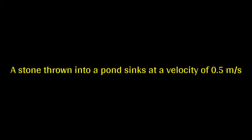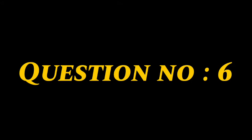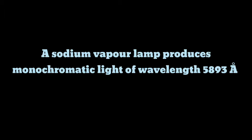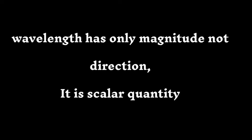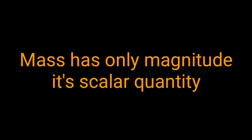Fifth question: a stone thrown into a pond sinks at a velocity of 0.5 m/s — since velocity has both direction and magnitude, it is a vector quantity. Sixth question: a sodium vapor lamp produces monochromatic light of wavelength 5893 Ångström — since wavelength has only magnitude, it is a scalar quantity. Seventh question: the mass of the earth is 5.9742 × 10²⁴ kg — since mass has only magnitude, it is a scalar quantity.